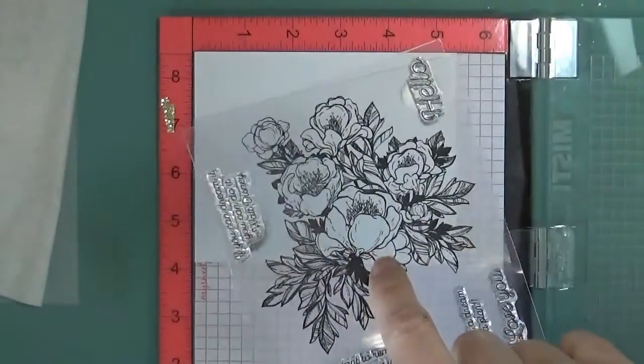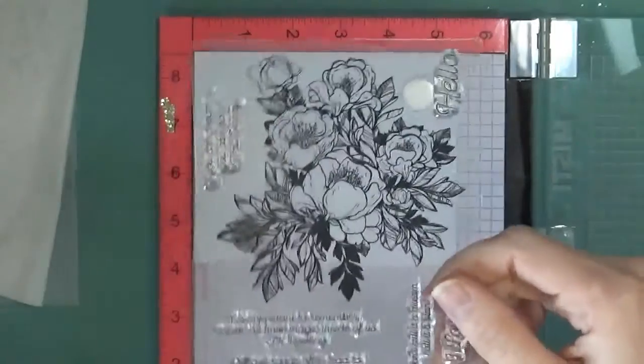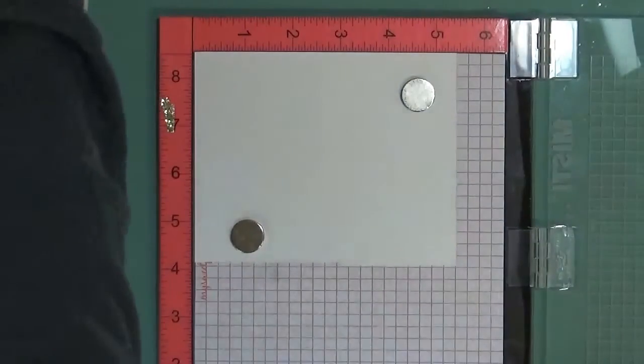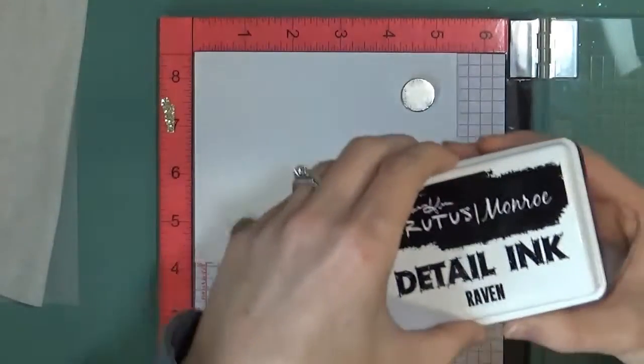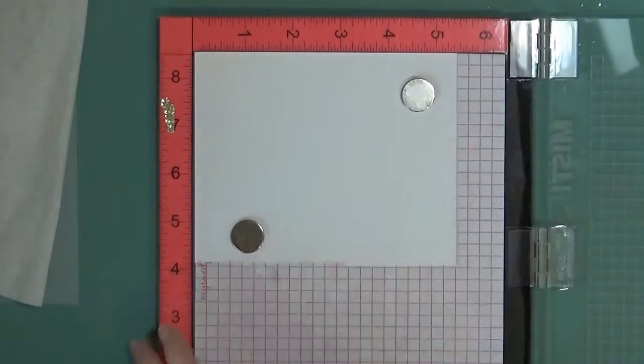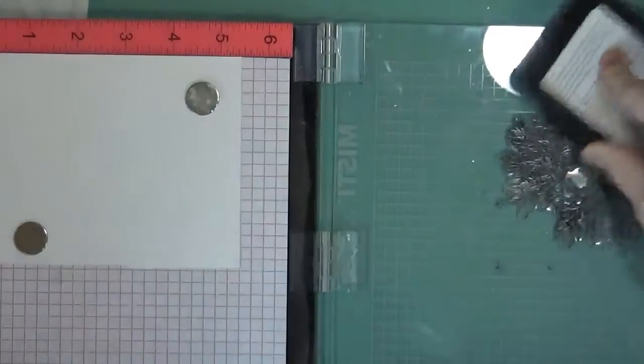I'm going to be mostly using this flower and I want to stamp it out for you just to show you how it looks. So I'm using some Brutus Monroe Detail Ink. This is their Raven Black.